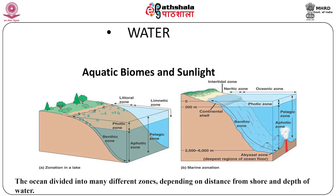Aquatic biomes and sunlight: in large bodies of standing water including the oceans and lakes, the water can be divided into zones based on the amount of sunlight it receives. The photic zone extends to a maximum depth of 200 meters below the surface — this is where enough sunlight penetrates for photosynthesis to occur, and algae and other photosynthetic organisms can make food and support food webs. The aphotic zone is water deeper than 200 meters, where too little sunlight penetrates for photosynthesis to occur; as a result, food must be made by chemosynthesis or else drift down from the water above.